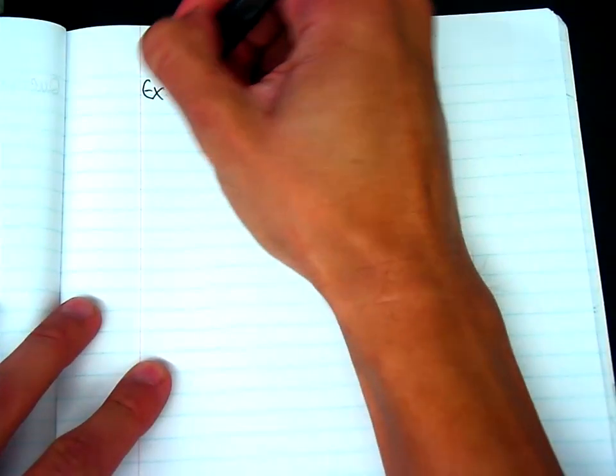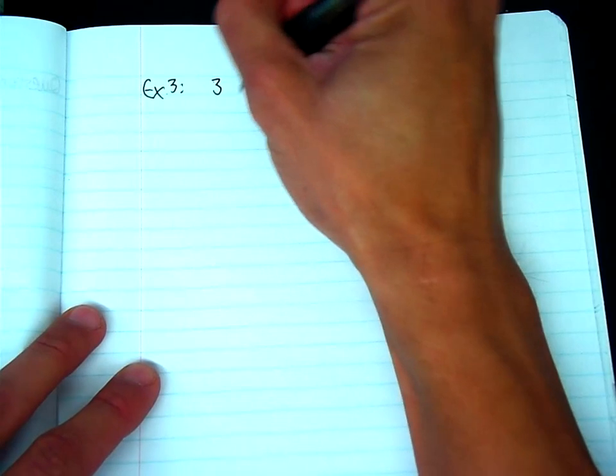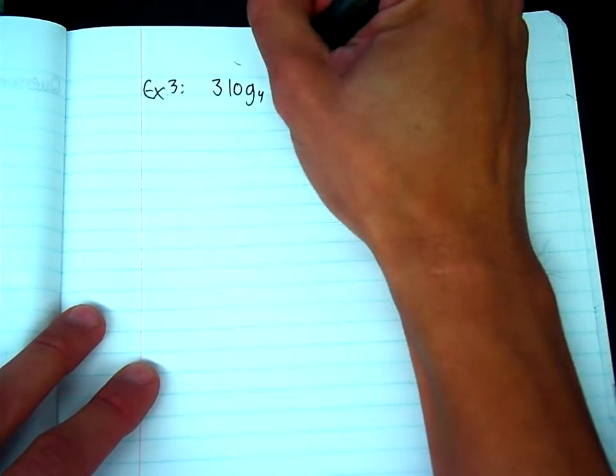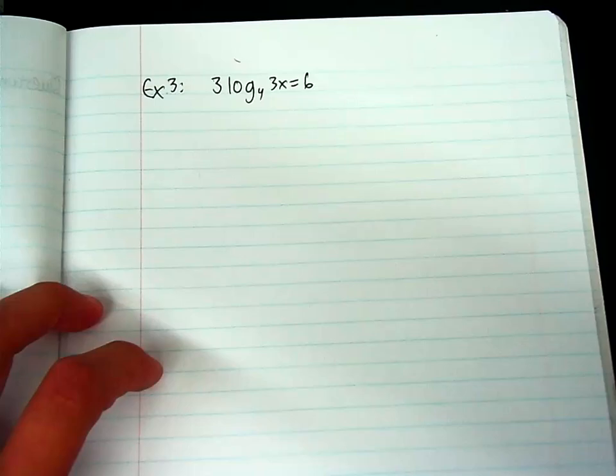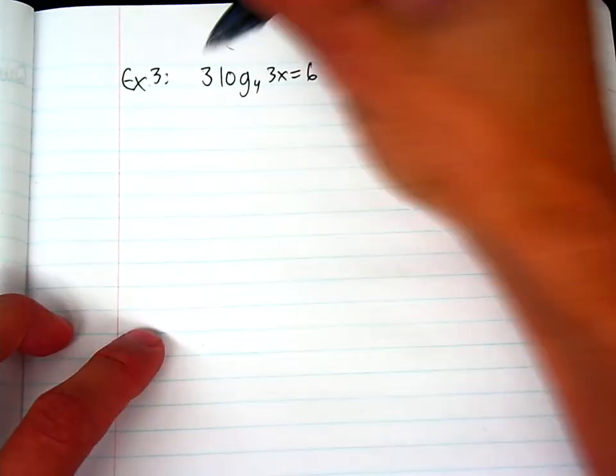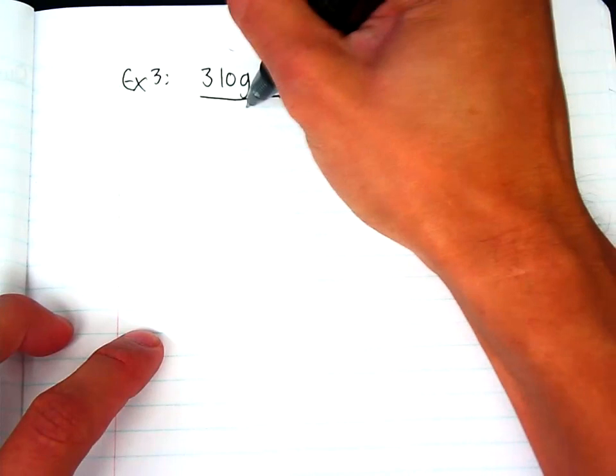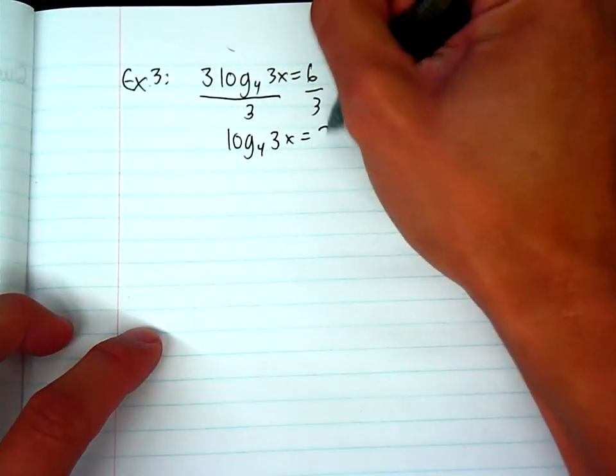All right, let's do the third example. Okay, the third example is 3 log base 4 of 3x equals 6. Okay, so when I'm looking at this, I want to solve for x. Because 3 is bugging me, so I'll probably divide the whole thing by 3.